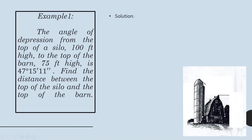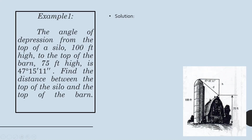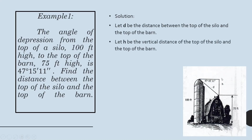Here is the silo, which is 100 feet high, and here is the barn, which is 75 feet high. It is said that the angle of depression from the top of the silo to the top of the barn is equal to 47 degrees, 15 minutes, and 11 seconds. This is the angle of depression from the top of the silo to the top of the barn. We are asked to find the distance between the top of the silo and the top of the barn. We would let D be that distance, and we would let H be the vertical distance from the top of the silo to the top of the barn.